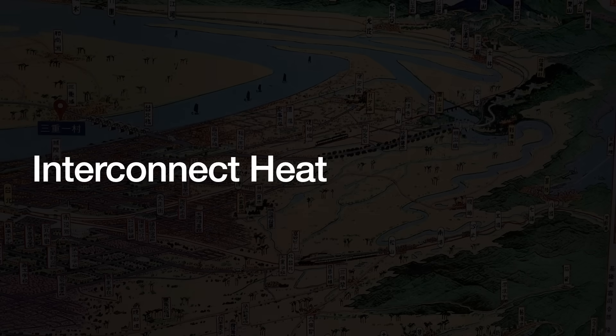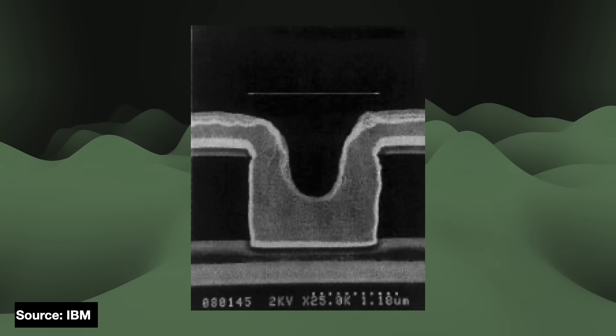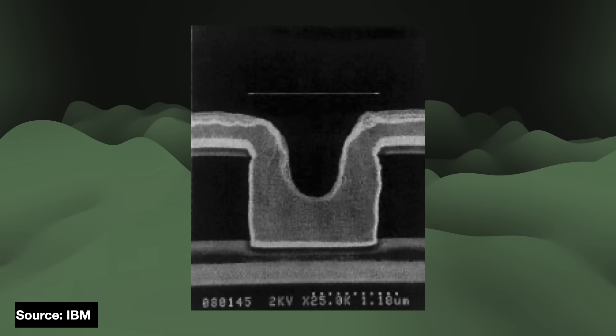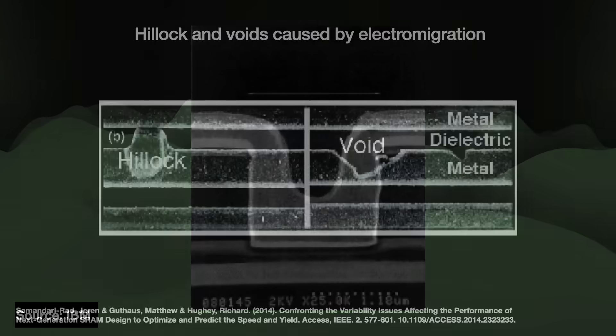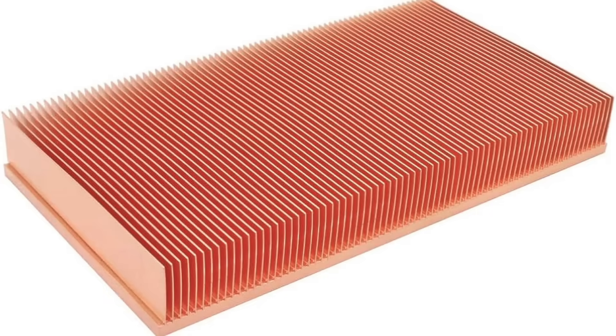An integrated circuit has more than just transistors — there are also interconnects, and these guys get hot too. These metal wires, most often copper, carry data and power around the IC. The IC will have several layers of these interconnects on top of one another, maybe up to a dozen. These wires also self-heat due to current and resistance, and such heat can accelerate a type of deterioration known as electromigration — where high current densities cause the metal atoms in the interconnects to move around, creating either voids or bumps known as hillocks, which in some cases can bridge to neighboring wires and create unintended electrical connections.